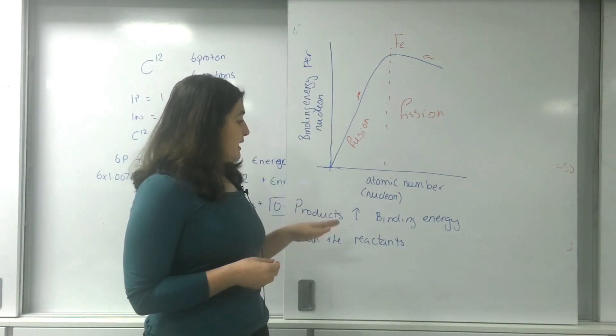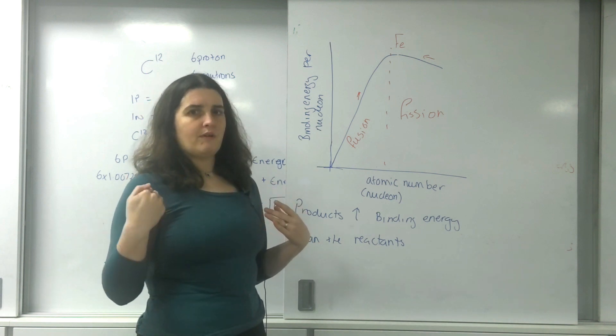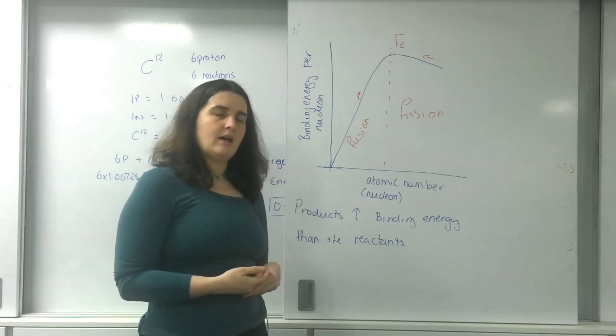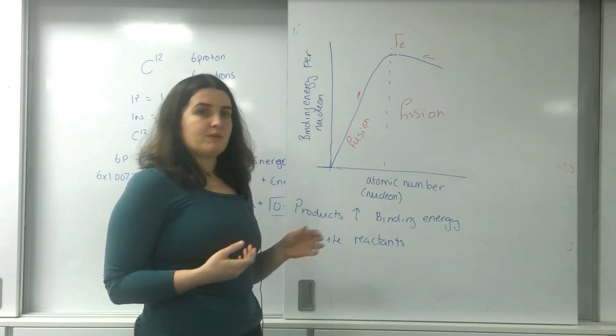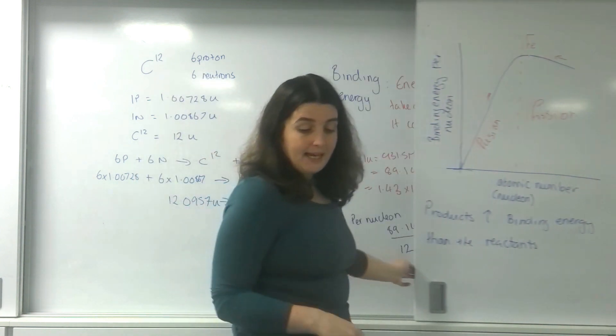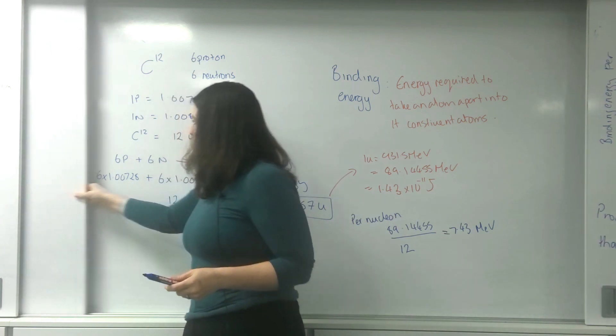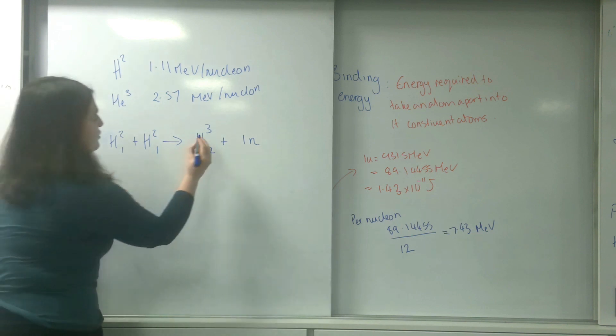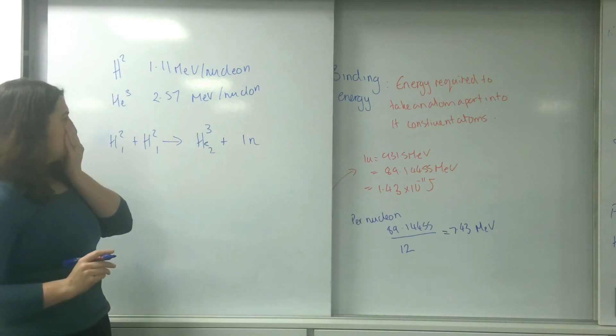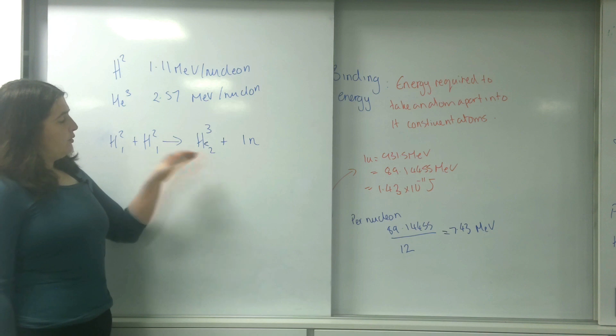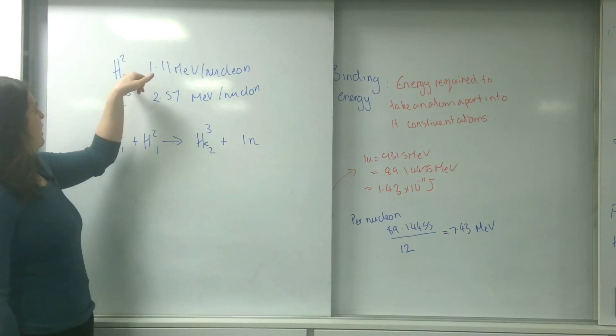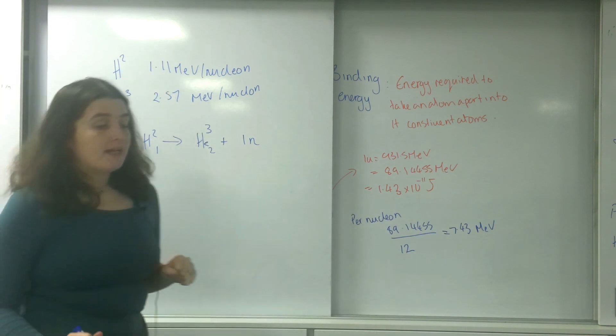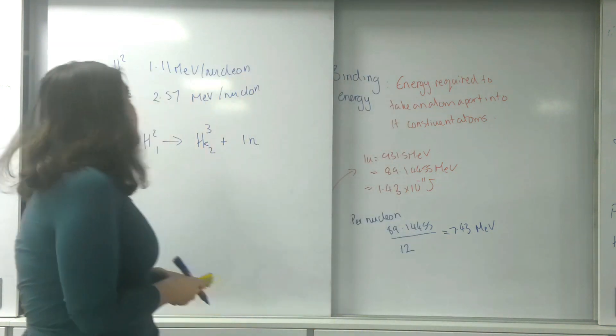This idea that the products must have a higher binding energy than the reactants - one side of the reaction must have a higher binding energy than the other, and that means that energy was released. I'm going to give you an example of that now with this reaction here. I've got two deuterium going into a helium and a neutron here. I know this information: that deuterium has 1.1 MeV per nucleon and helium-3 has 2.57 per nucleon.